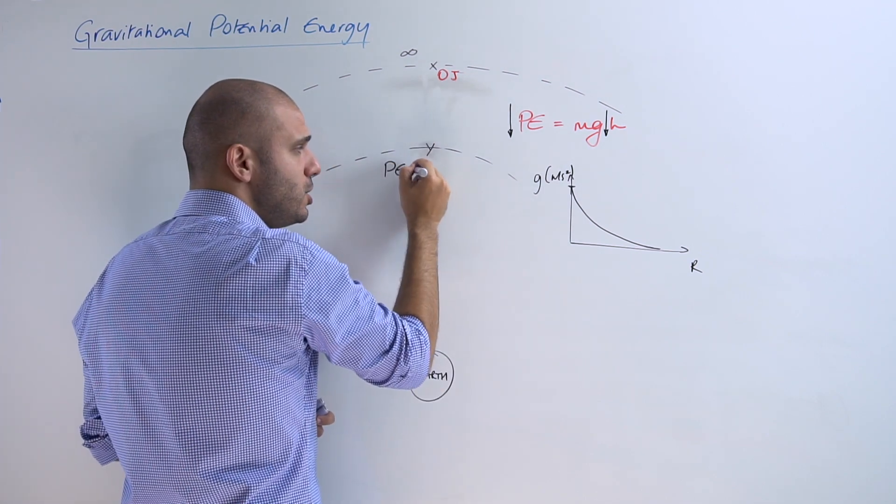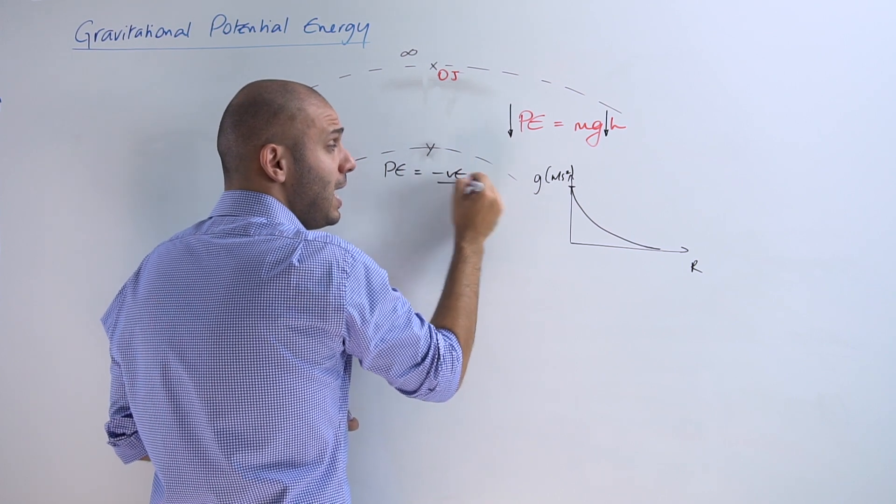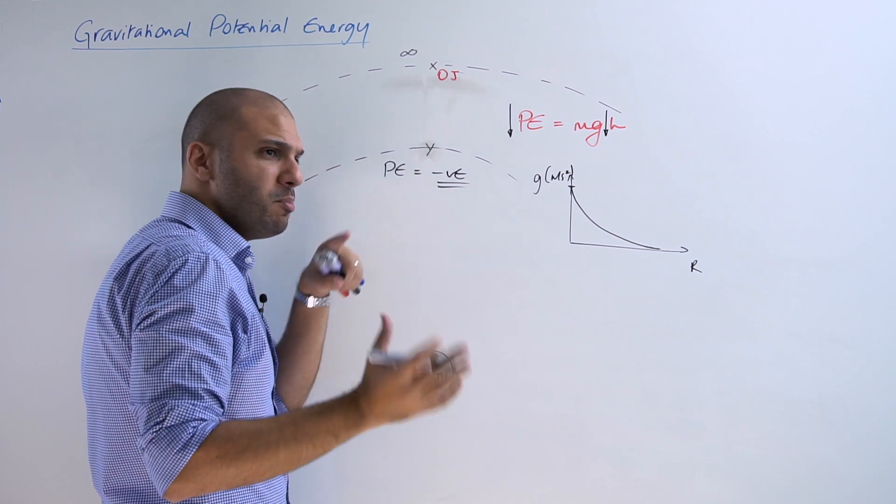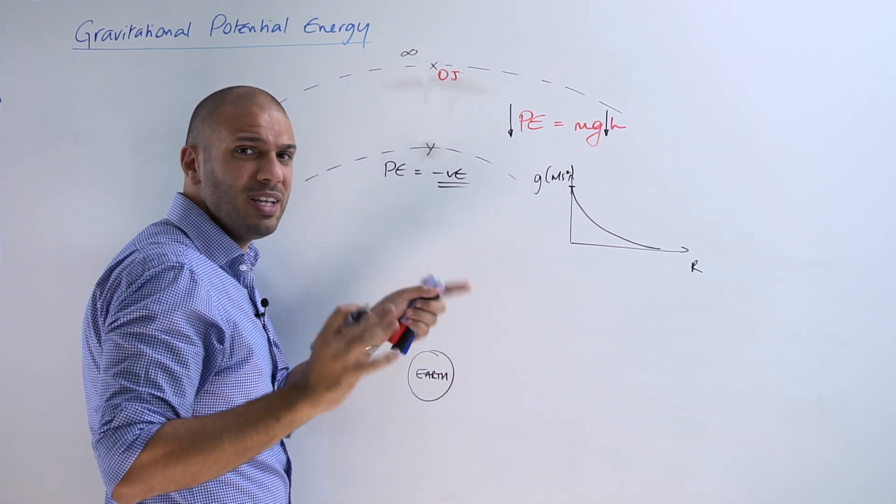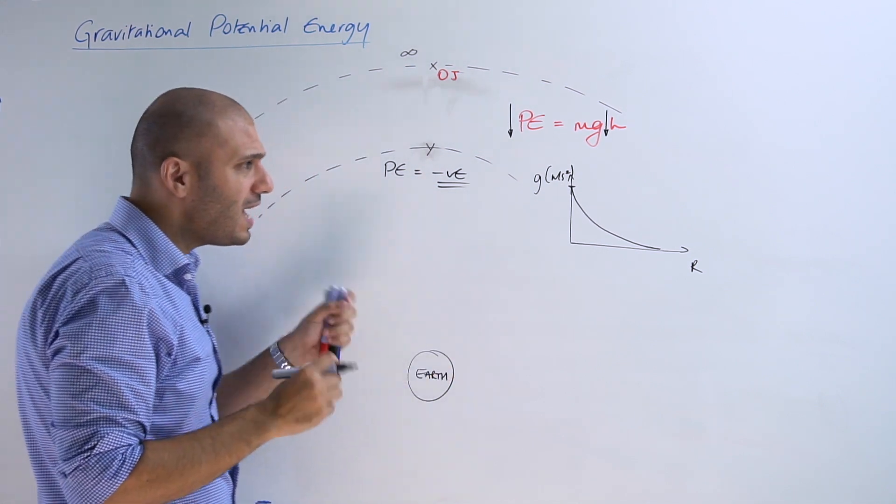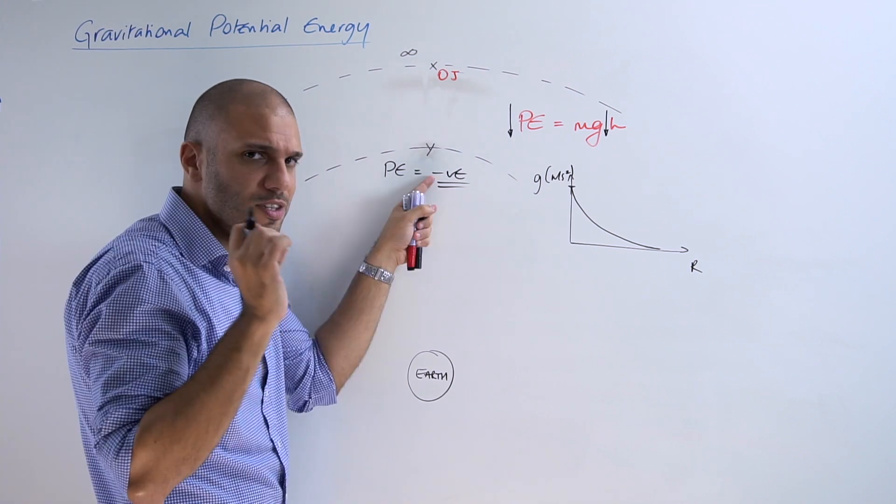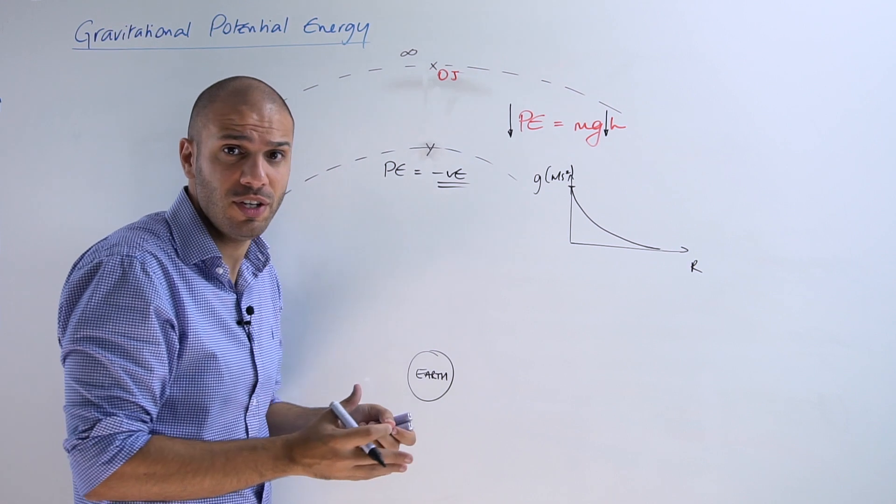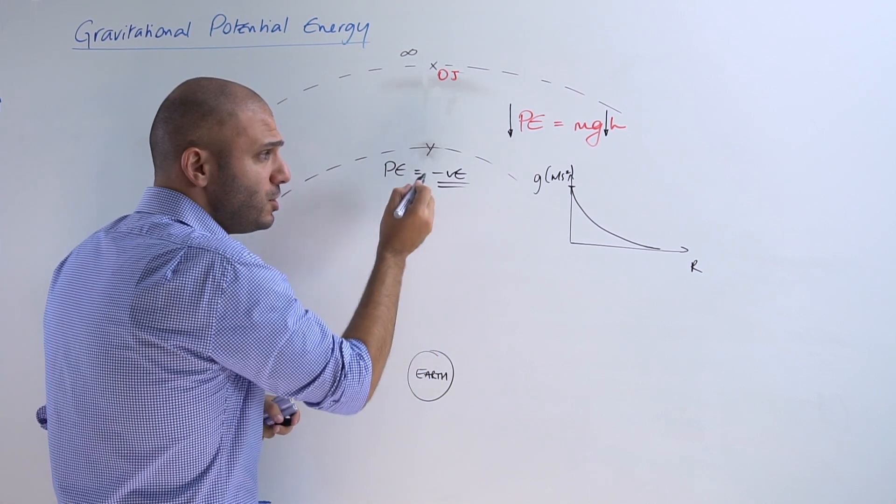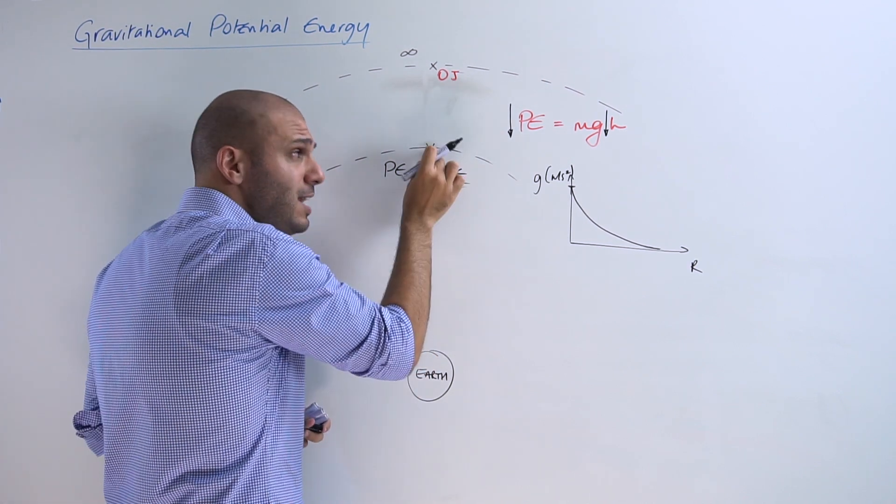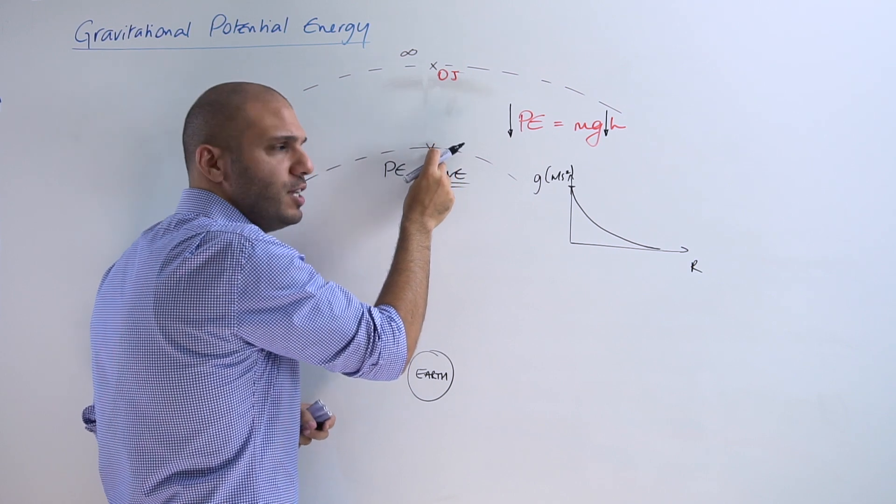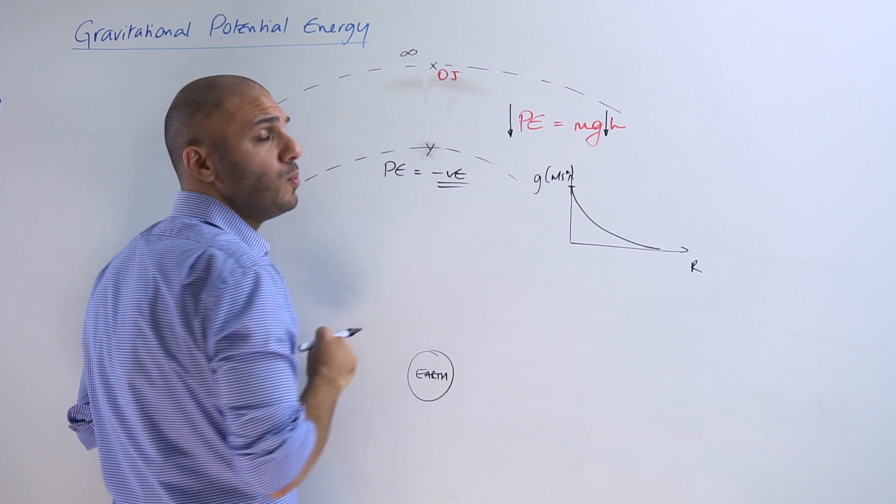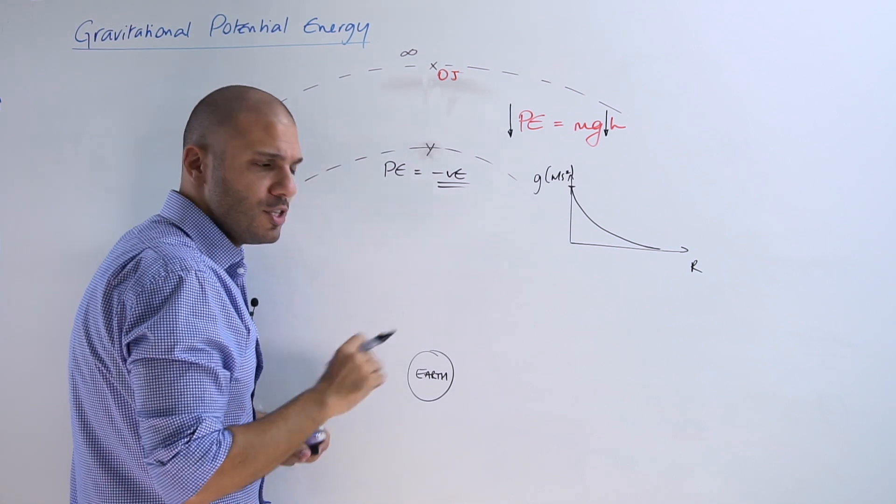Now we usually see positive and negative values when we're dealing with vectors, and we do know that energy is a scalar quantity. This minus sign does not give an indication of direction, but rather it just gives us an indication that any object at point Y is going to have less gravitational potential energy than when it was at point X.